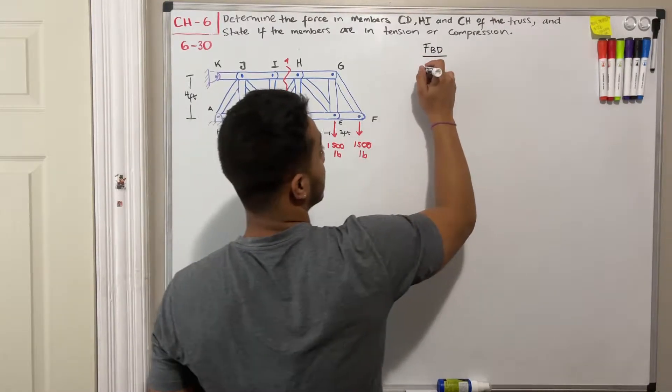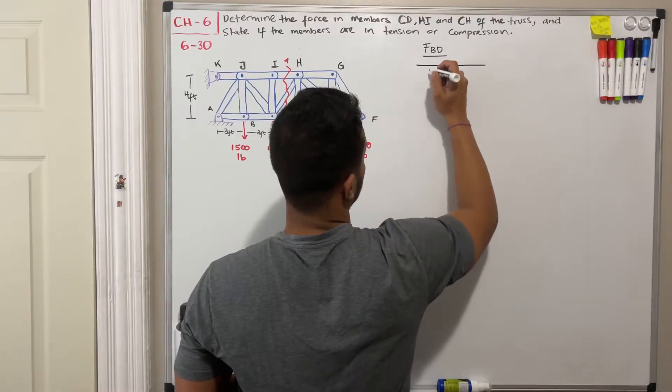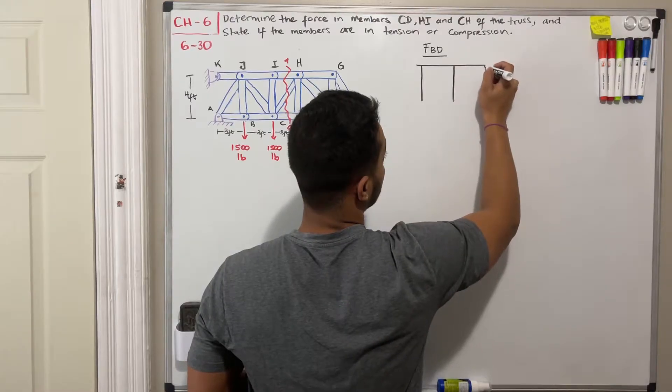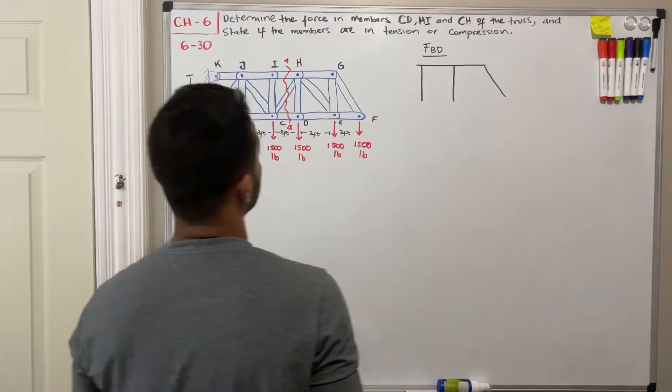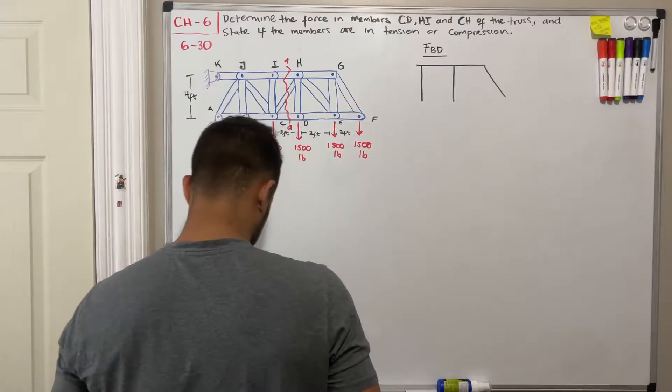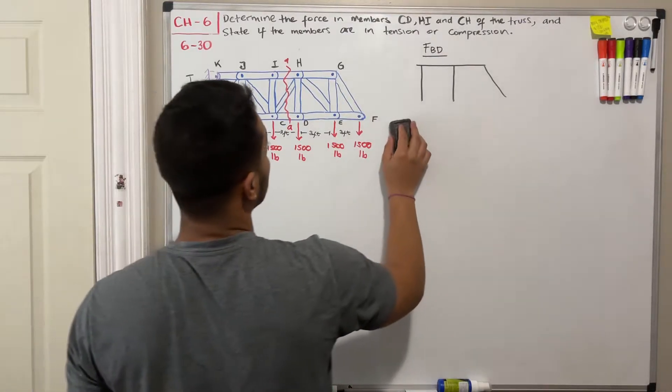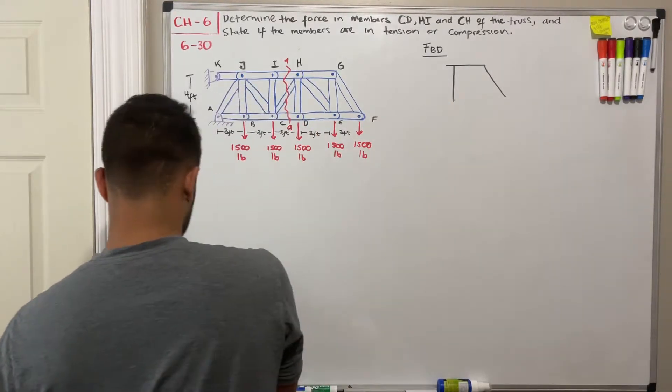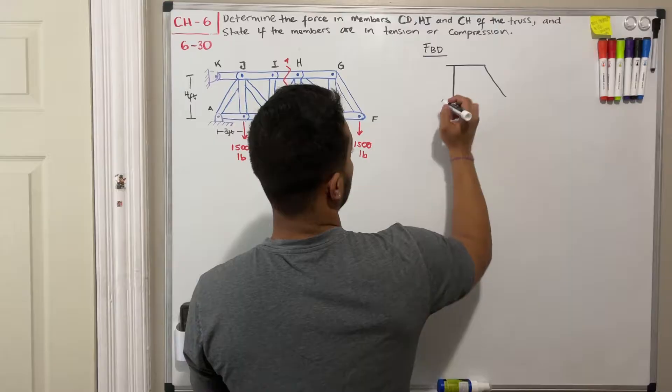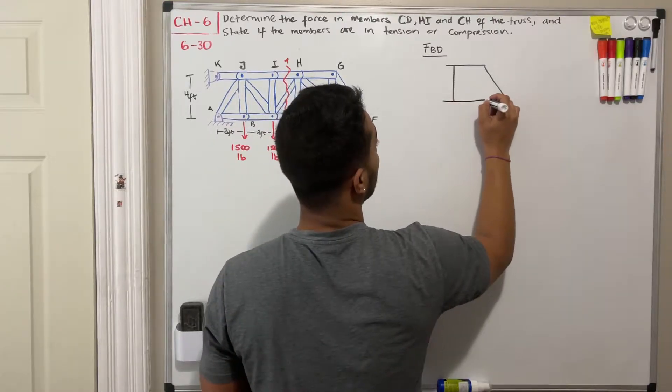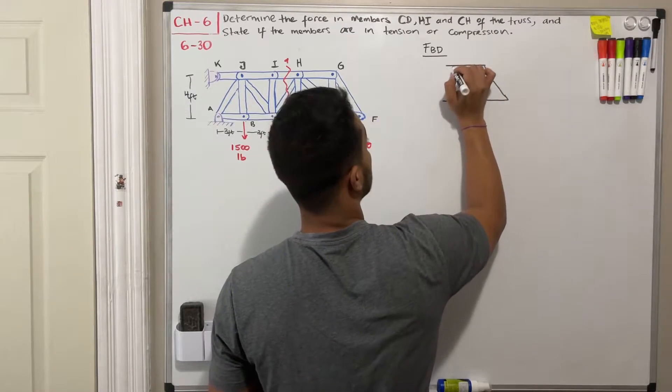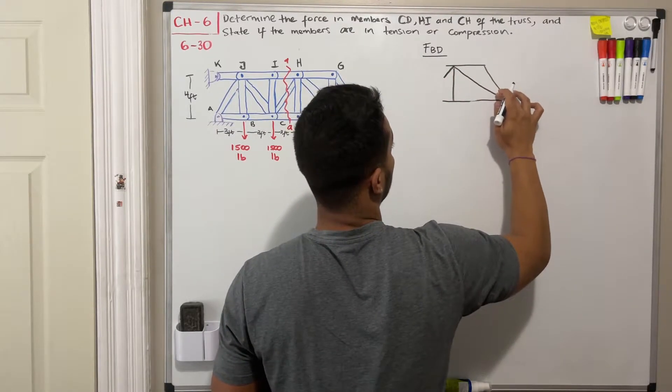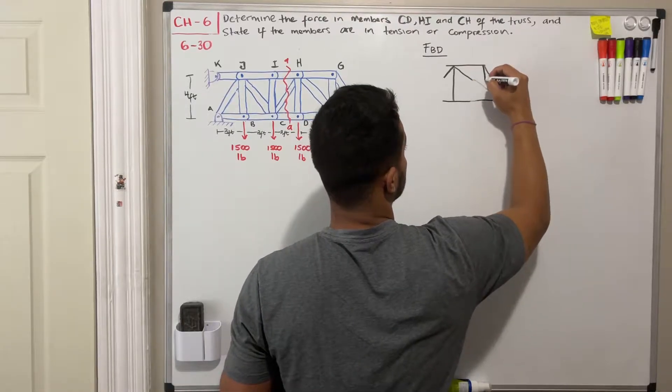Okay. So if we draw our free body diagram, we draw it like this. I think I drew an extra one. So we don't need, we only need up to this guy, like this. That's where we cut it. Then we have our bottom. And lastly, this diagonal member.